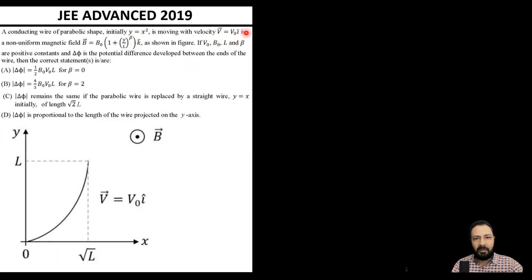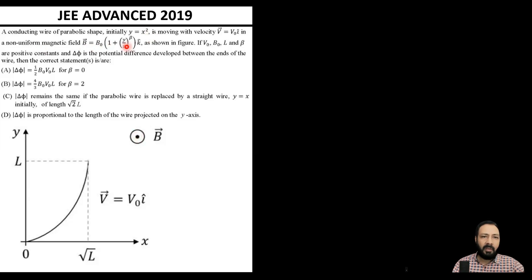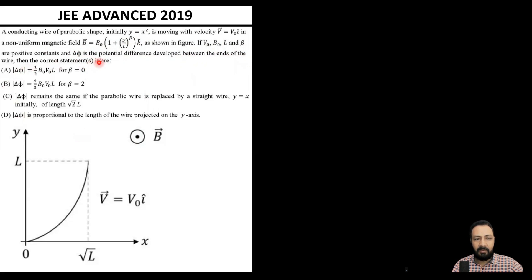This wire is translating along the x-axis with a uniform velocity v₀. It is placed in a non-uniform magnetic field directed towards us along the positive z-direction. The field varies with y as B = B₀(1 + y/l)^β, where l and β are positive constants.